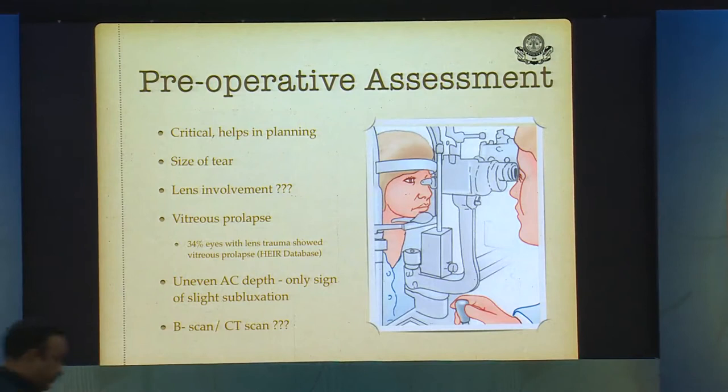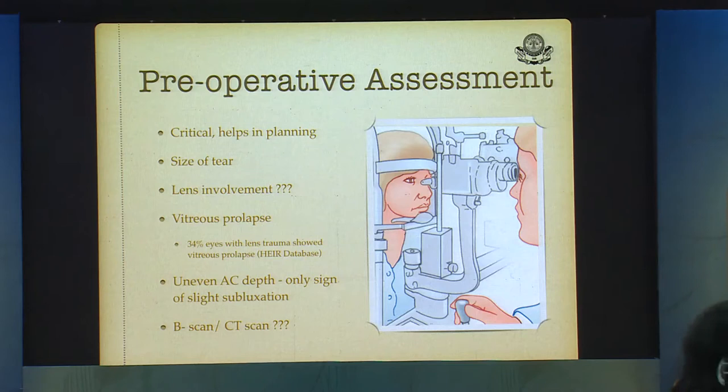A preoperative assessment is extremely important because it helps in planning what you're supposed to do — the size of the tear, its location, whether any lens is involved, the status of the vitreous, whether it is prolapsed or not. Whenever there is an unequal depth or any sign indicating subluxation, you can go to retroillumination and look for the lens edge.